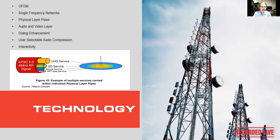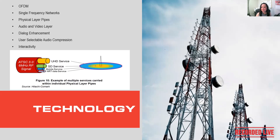Moving on to interactivity — this relates to bridging over-the-air and over-the-top content. There can be apps that are broadcast as part of the audio and video where the user can interact with what's on screen. Some data is broadcast over the air, but if you have an internet connection, you can get enhanced data. For example, CBS demonstrated this with a cooking show — in the lower right corner of the screen was a little interactive element, or 'bug,' which you could navigate using your TV remote's up, down, left, right, and select buttons.